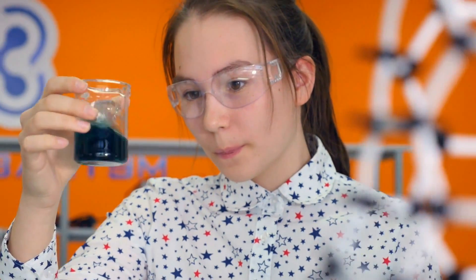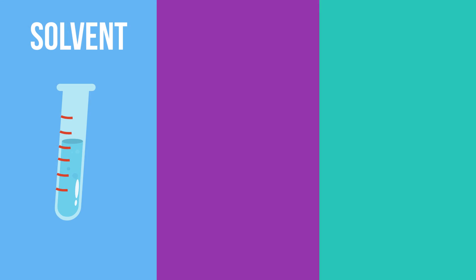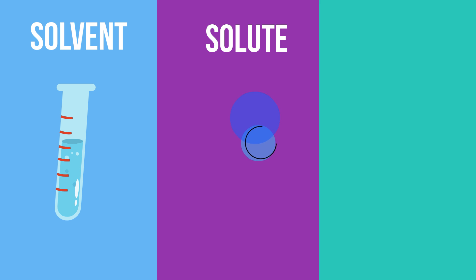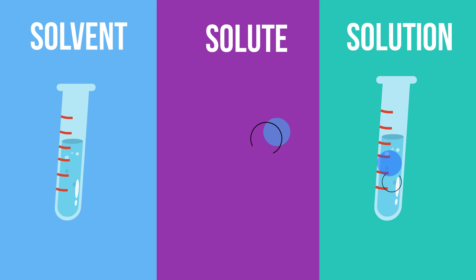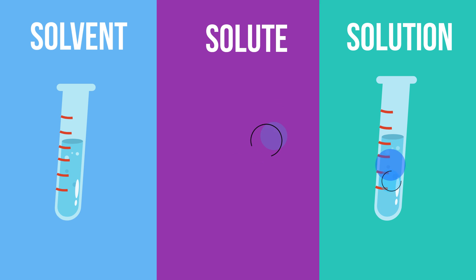Up first, let's talk about what the solvent is. This is the substance that is doing the dissolving. A solute is the substance to be dissolved. And the solution is the solute plus the solvent.